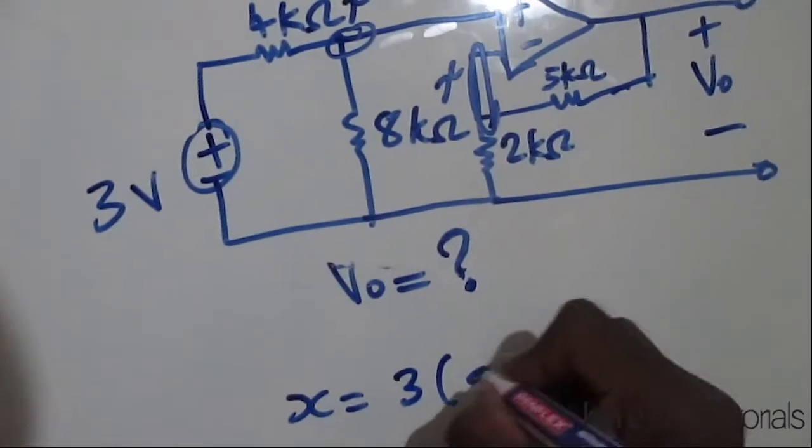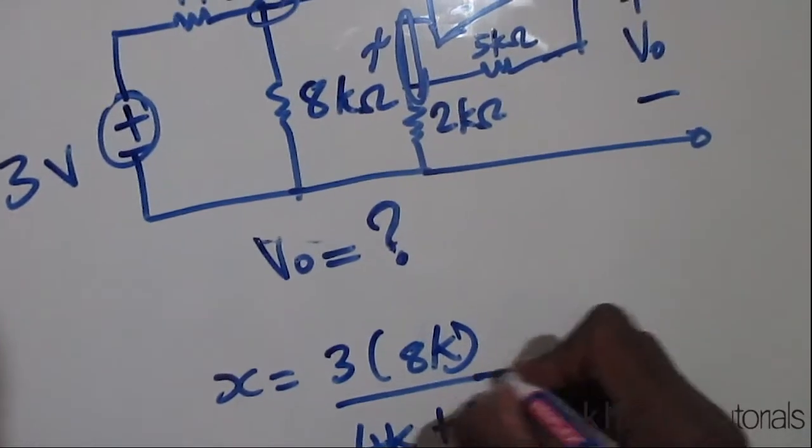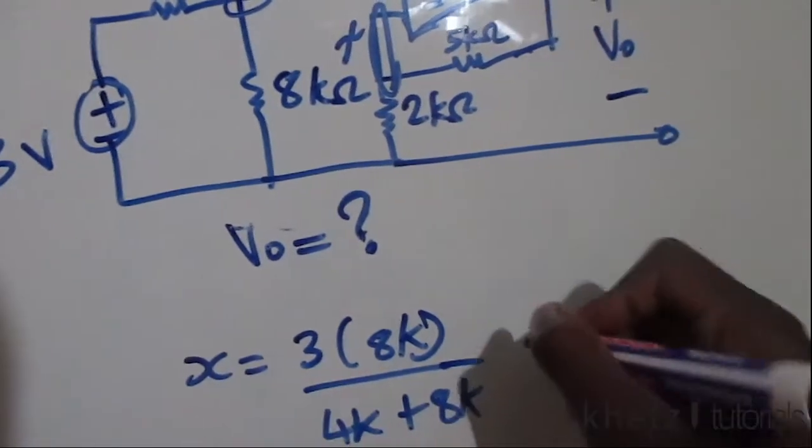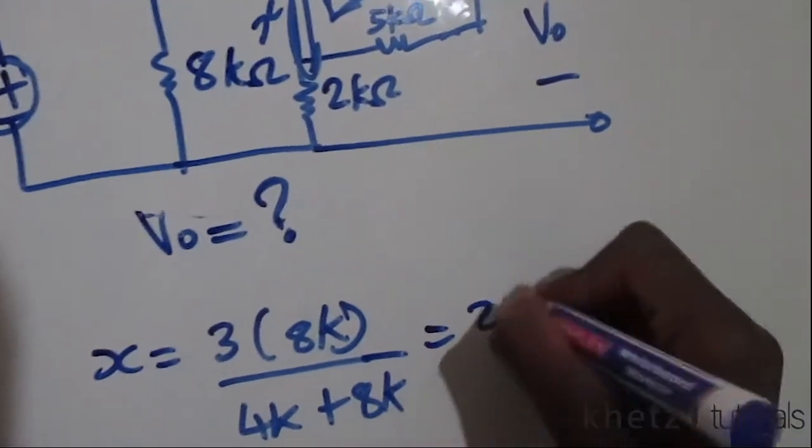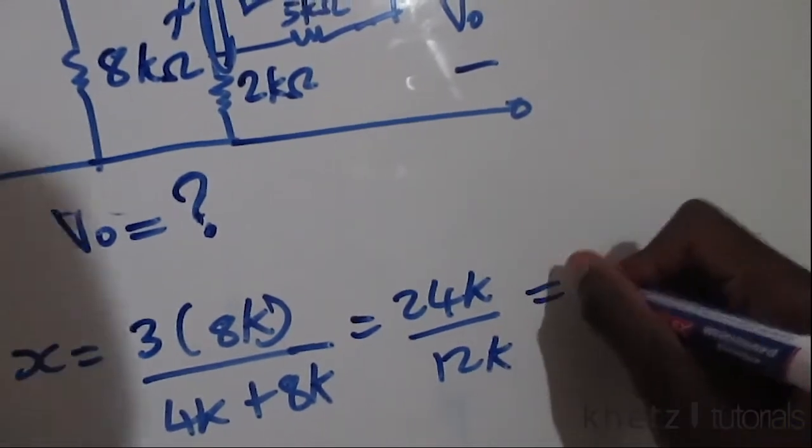x equals 3 volts multiplied by 8k divided by 4k plus 8k. This is going to be 24k at the top divided by 12k at the bottom, which means x is equal to 2 volts.